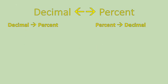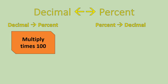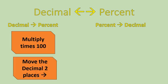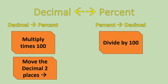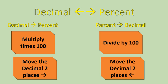First off, when you're converting a decimal to a percent, all you need to do is multiply times 100, or you can move the decimal two places to the right. Conversely, if you're converting a percent to a decimal, you would do the opposite: either divide by 100, or move the decimal two places to the left.